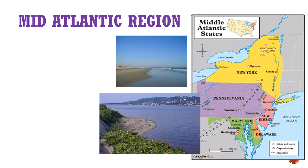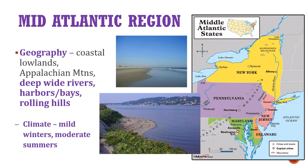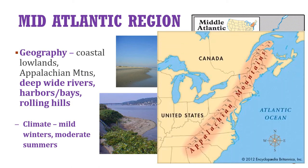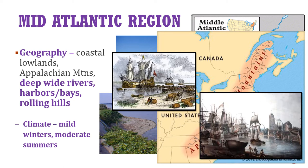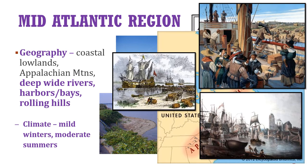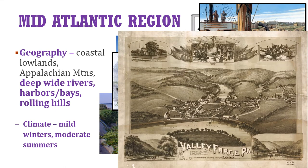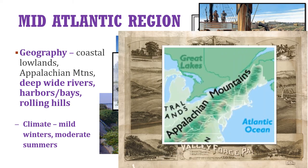Even though these four colonies have different stories of how they were settled, their geography and climate are similar. Along the coast, lowlands exist. In the west, these colonies host the Appalachian mountain range. Deep, wide rivers created excellent transportation routes for settlers to travel on, find settlements, and send goods for trade. Colonists living in eastern towns and cities benefited from deep harbors and bays ideal for docking large ships for trading. The rolling hills provided farmland in the middle and western parts of the colonies, and the Appalachian mountain chain runs through the western portions of all of these colonies.